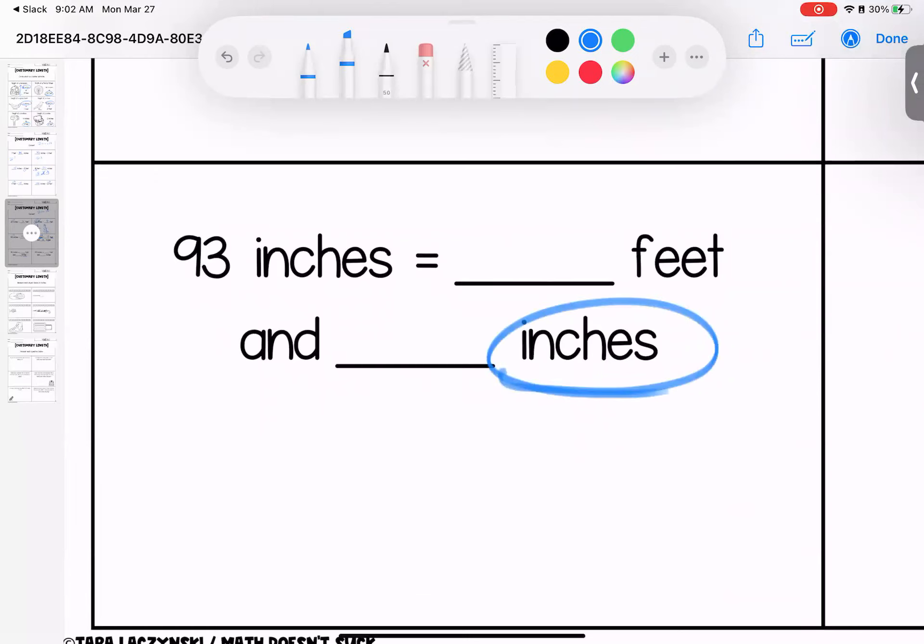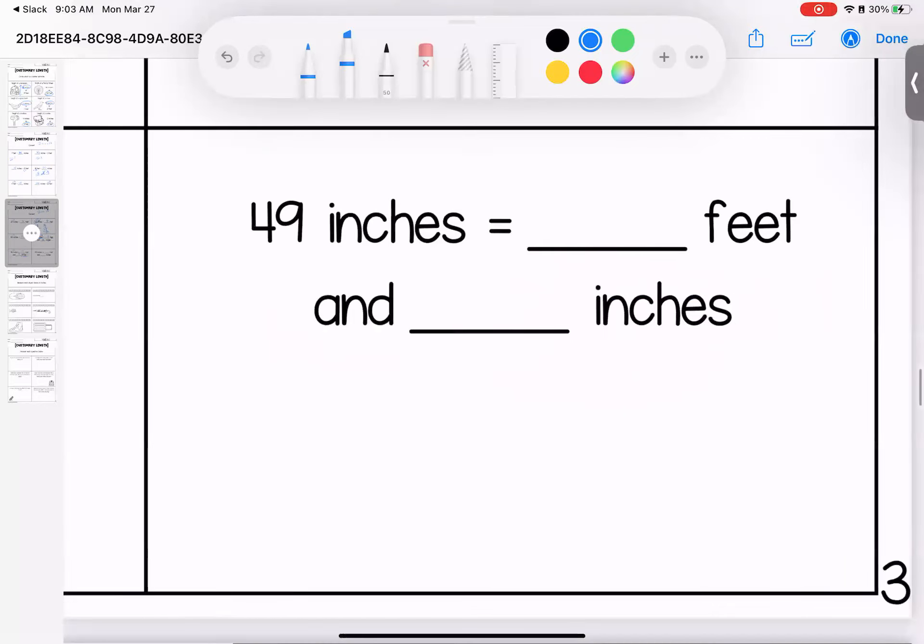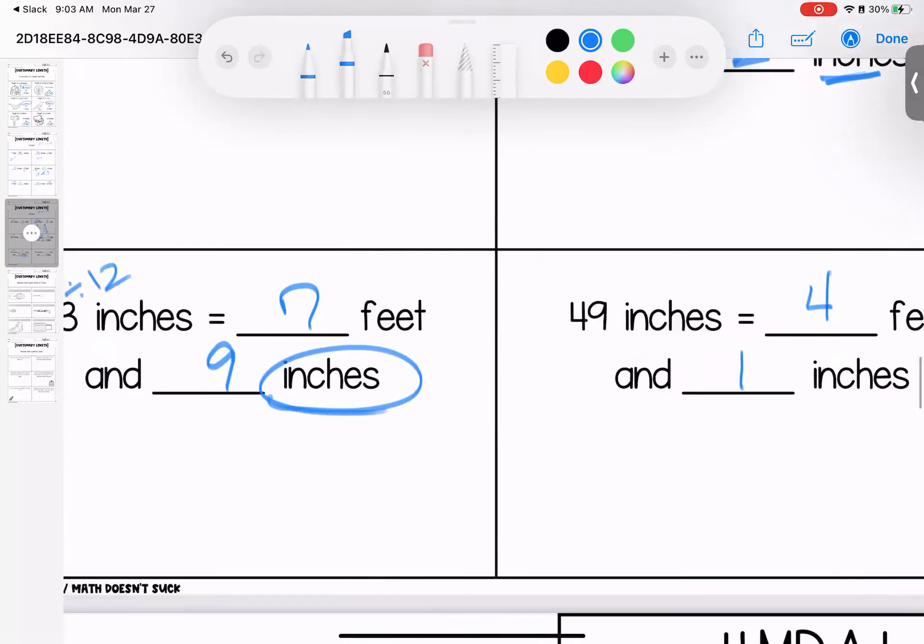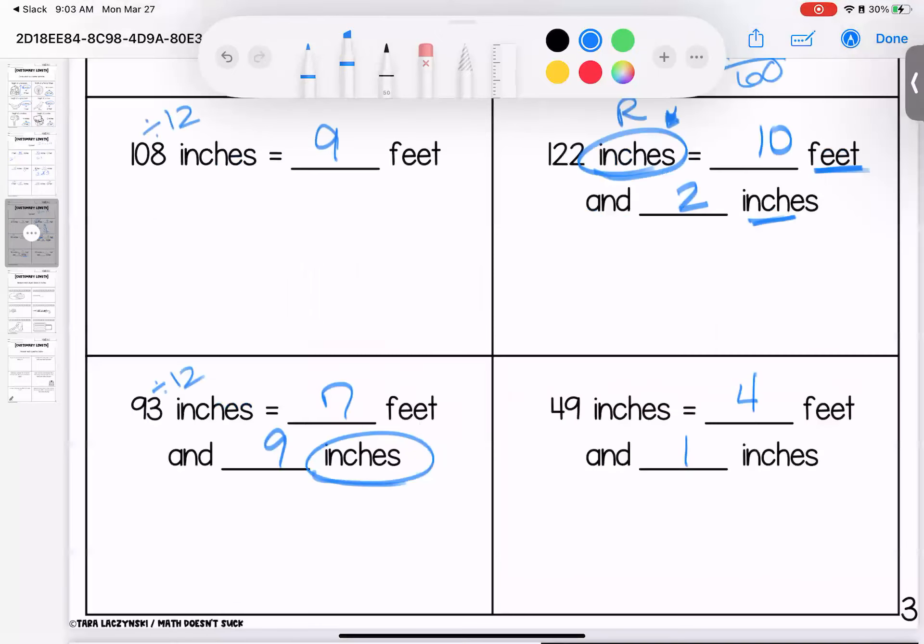93 inches. Because again, when I see feet and inches prompting me, that tells me that I need to think about this division. So if I do 93 divided by 12, that gives me 7. And when I look at what I have left over, I have 9 left over. So 7 times 12, if I'm thinking it through, is 84. 93 minus 84 gives me 9. And then over here, 49 inches. Again, I'm going to divide it out. 49 is going to give me 4 feet because 4 times 12 is 48, and it leaves me with 1 inch left over. Any questions on these? Bring them with you to class.